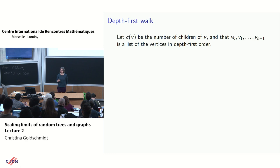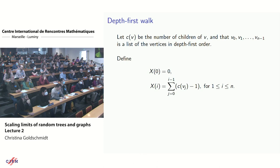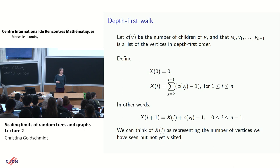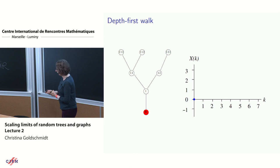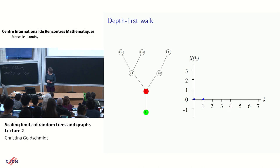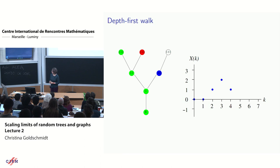For the depth-first walk, let c(v) be the number of children of vertex v. With depth-first ordered vertices, set x_0 = 0 and x_i equal to the sum from j=0 to i−1 of (number of children of v_j minus 1). The increment is just the number of children of v_j minus 1. Think of x as representing the number of vertices seen but not yet visited — the size of a stack of things to revisit later. Every time we add on (number of children minus 1), that corresponds to the set of blue vertices in the picture.